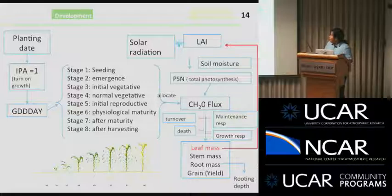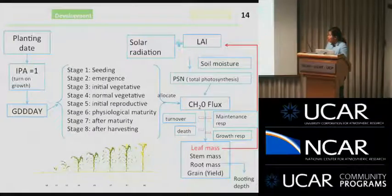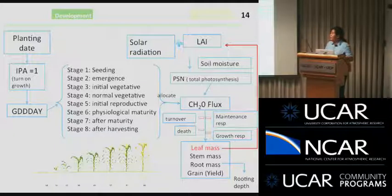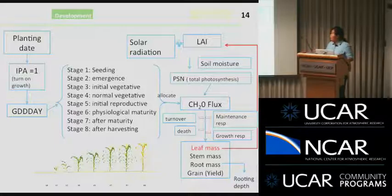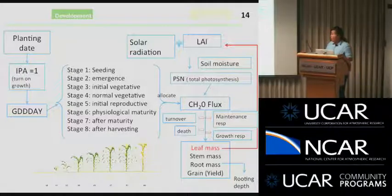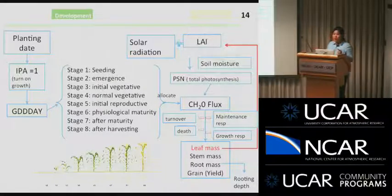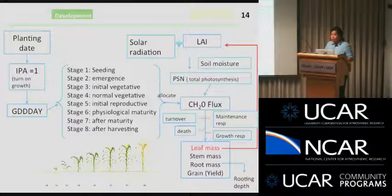This is the model from WIC. You give the model a planting date, then it starts calculating growing degree days. Based on growing degree days, the model has eight growth stages. Based on these stages, crops have different allocations of carbohydrates, which after turnover, deaths, and respirations, are allocated to different plant parts. From leaf mass we calculate LAI, which provides feedback to the host model. From root mass we calculate rooting depths, which have strong interactions with soil moisture.